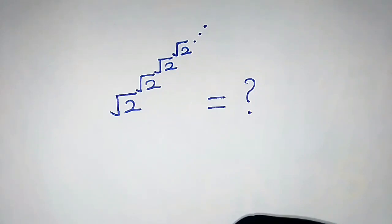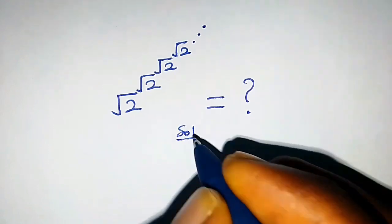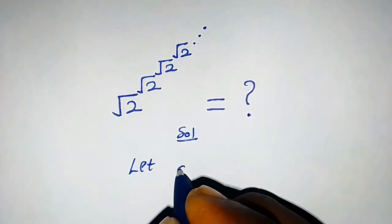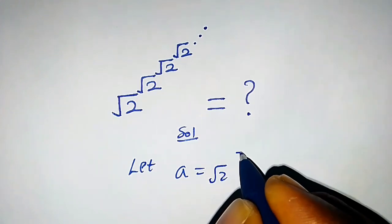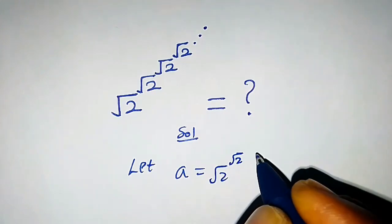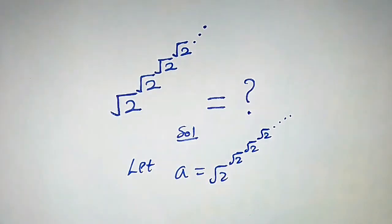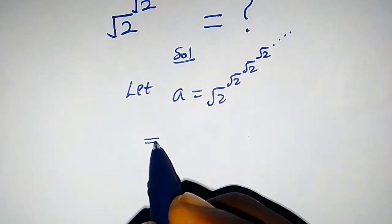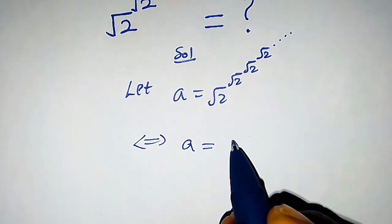How do we solve this infinite power tower of square root of 2? First, let's assume a equals square root of 2 to the power of square root of 2 to the power of square root of 2, on and on like that. This supposition will be true if and only if a equals square root of 2 raised to the power a — that is, when our exponent is a.